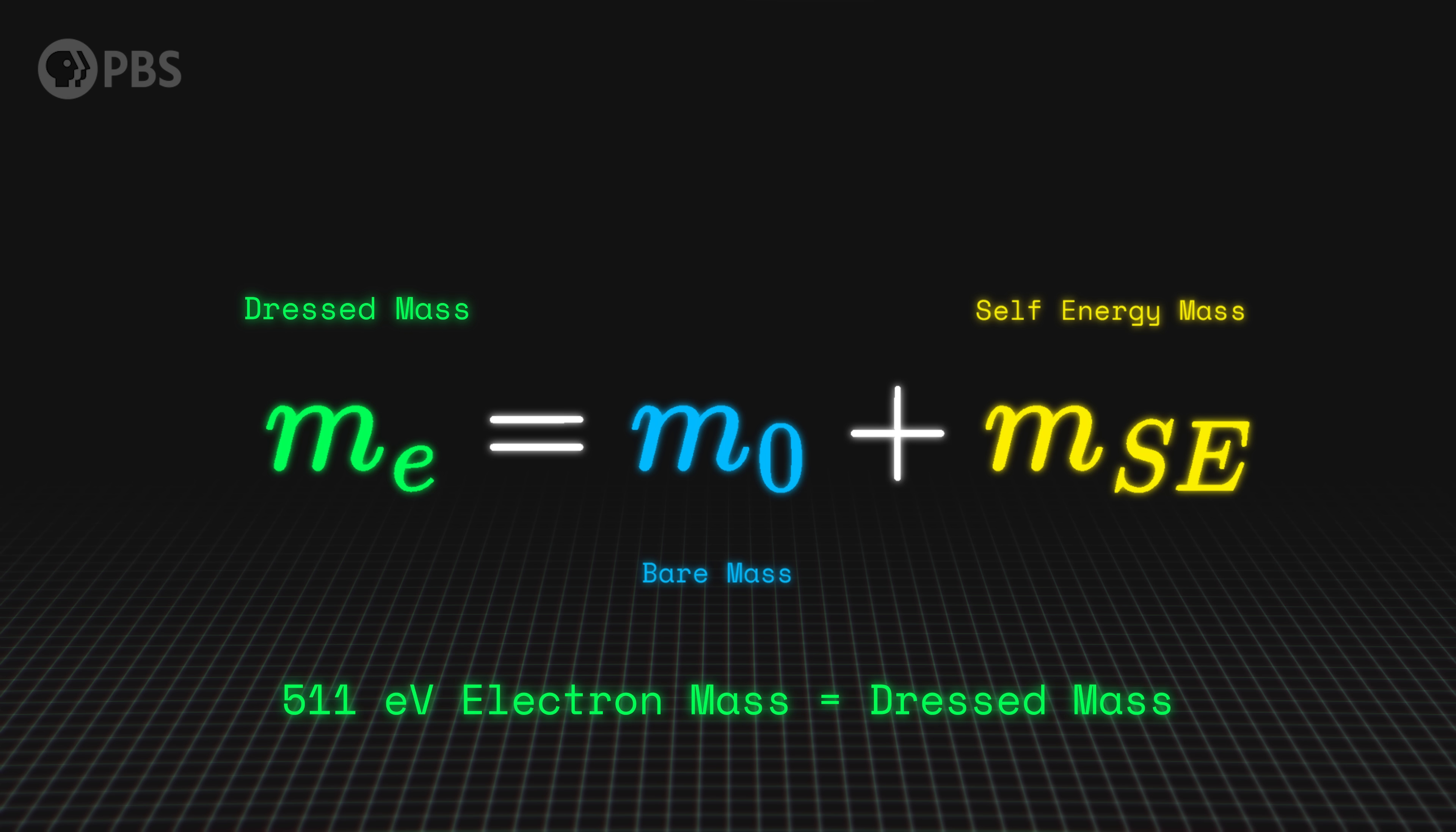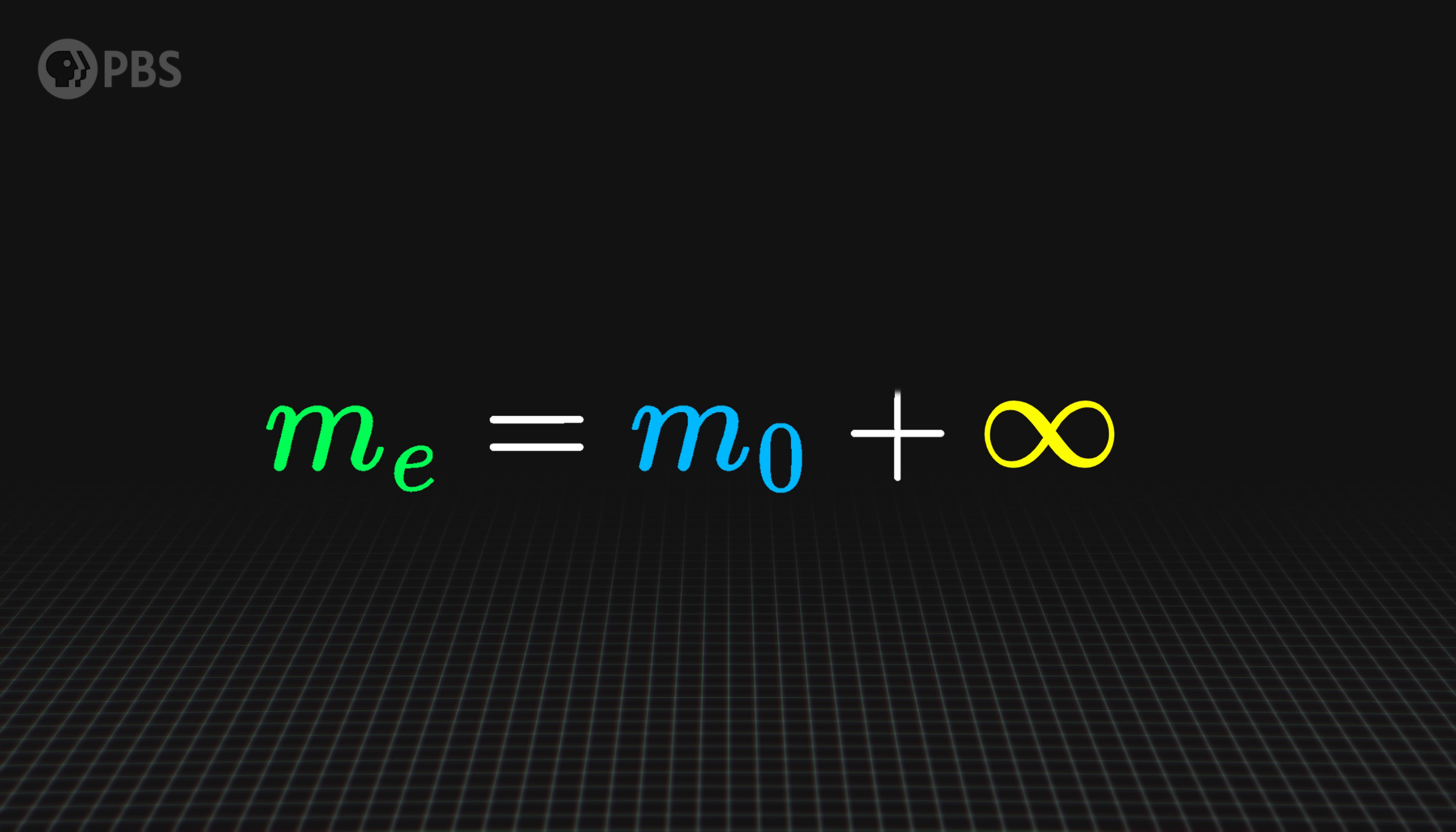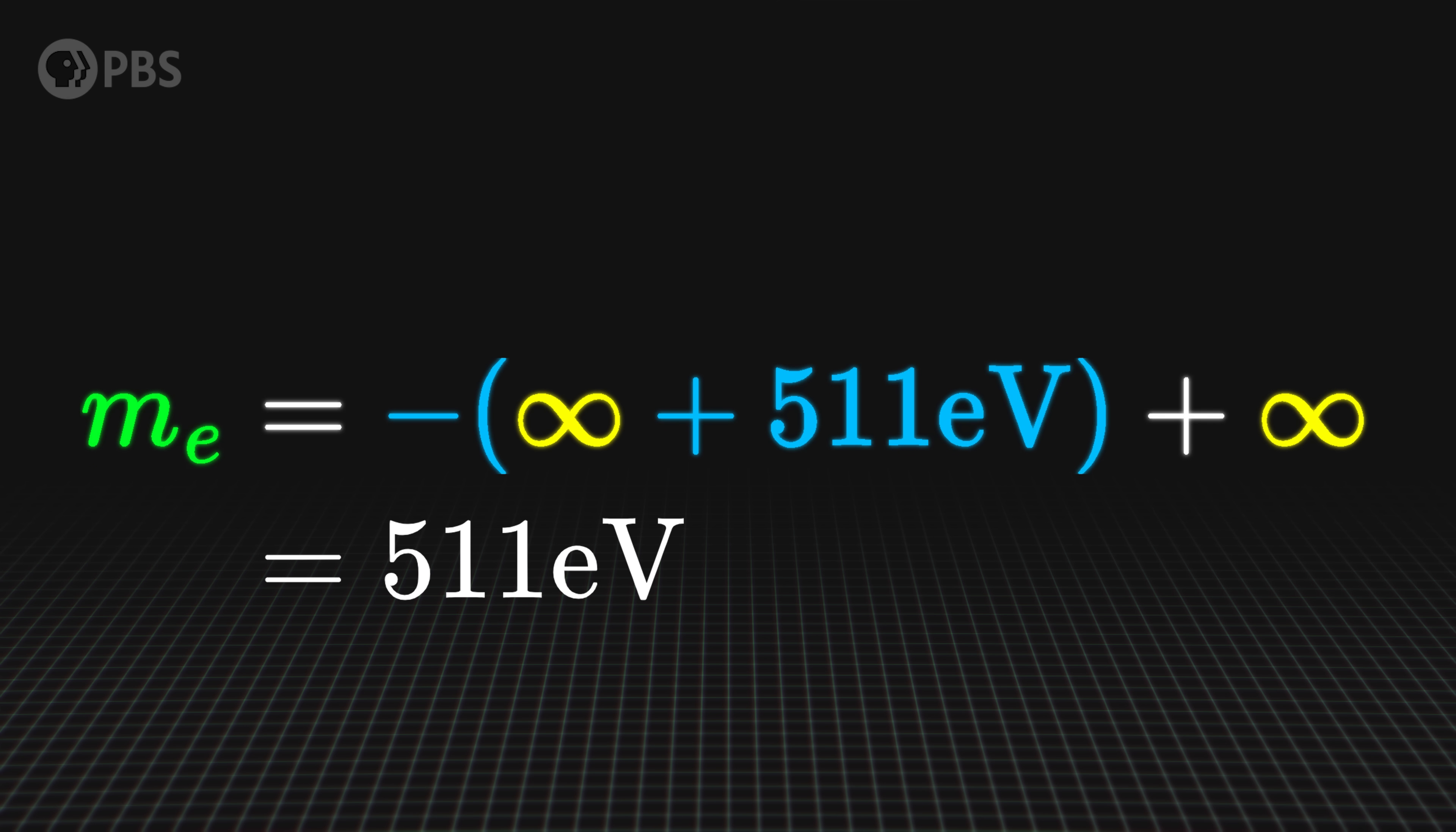The measured 511 electron volts electron mass is its dressed mass. This equation equating the dressed to the bare plus self-energy masses can work perfectly well, even with a tiny dressed mass of 511 electron volts and an enormous or even infinite self-energy mass. All we need to do is give the electron a bare mass that's also huge and negative, and just a hair smaller in magnitude than the self-energy mass. In fact, you could even fix an infinite self-energy mass with a negative infinite bare mass. Infinity minus infinity minus 1 equals 1. No problem.